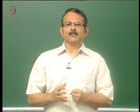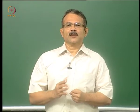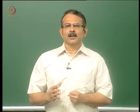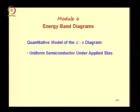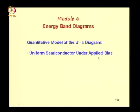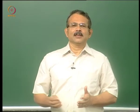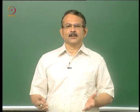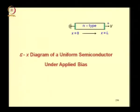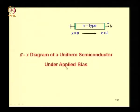In this lecture we shall consider a uniform semiconductor under applied bias and then a spatially non-uniform semiconductor under equilibrium. Spatially non-uniform means the doping may change as a function of x, or the crystal structure or composition may change as a function of x.